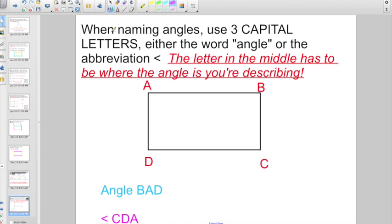Check out this guy. Here it says, when naming angles, use 3 capital letters. And you're either going to have to use the word angle or an abbreviation. Make yourself a little angle symbol, like this. And here's the heads up when you name angles. The letter in the middle has to be where the angle you're describing, where the vertex, where the corner is. So, let's take a look here. They want us to show angle BAD. So, A is the vertex, right? The letter in the middle. So, I'm going to start with B. I'm going to go to A, and then down to D. A is in the middle. So, that is angle BAD.